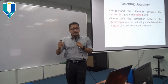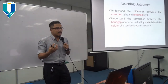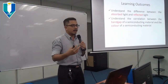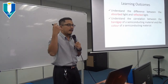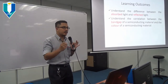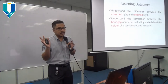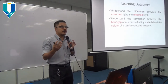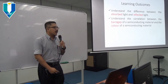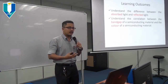The first learning outcome is to understand the difference between absorbed light and reflected light. When we shine any material under illumination of light — whether sunlight, torchlight, or any kind — the light could be absorbed by the material and vanished, because the light is being absorbed by the electron. Or the light is not absorbed but reflected out from the material, or transmitted through the material. So three consequences: the light will be absorbed, reflected, or transmitted.